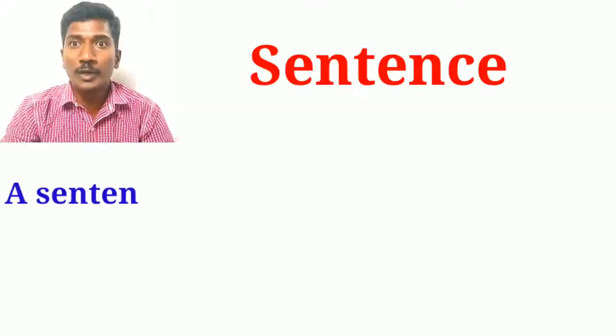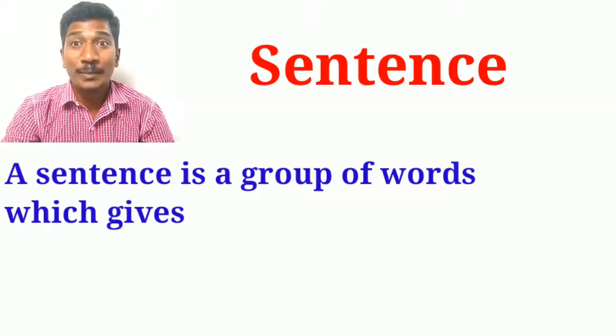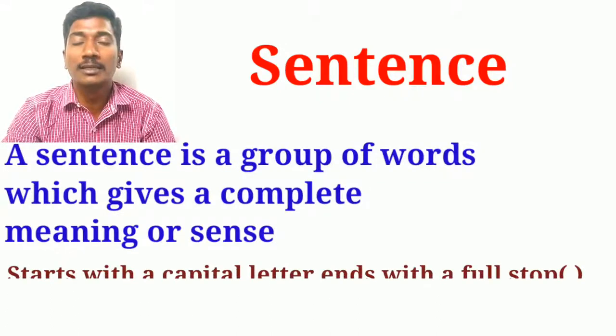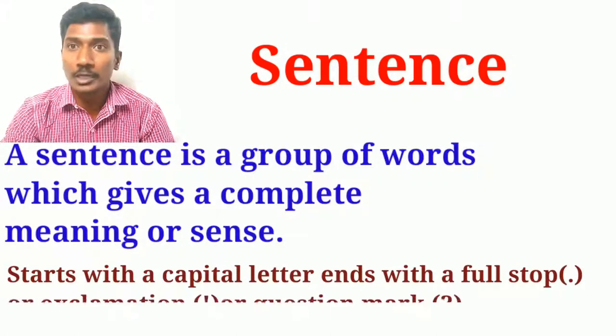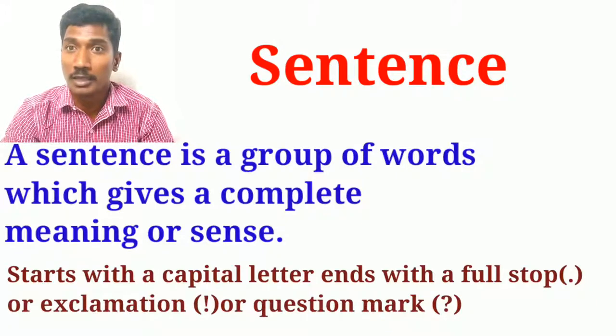Hello everybody. Welcome to English Easy Learn. I am your Arputaraj. In the previous video we discussed about what is a sentence. A sentence is a group of words which gives complete meaning — complete sense — which starts with a capital and ends with a full stop, exclamation mark, or a question mark. Today we are going to discuss about different kinds of sentences.